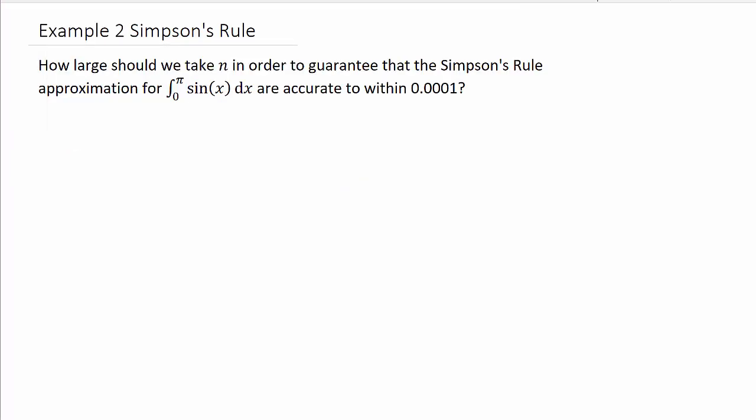Alright, so let's take a look at example two. It says how large should we take n in order to guarantee that Simpson's rule approximation for the integral of sin(x) dx from 0 to π is accurate to within 0.0001.